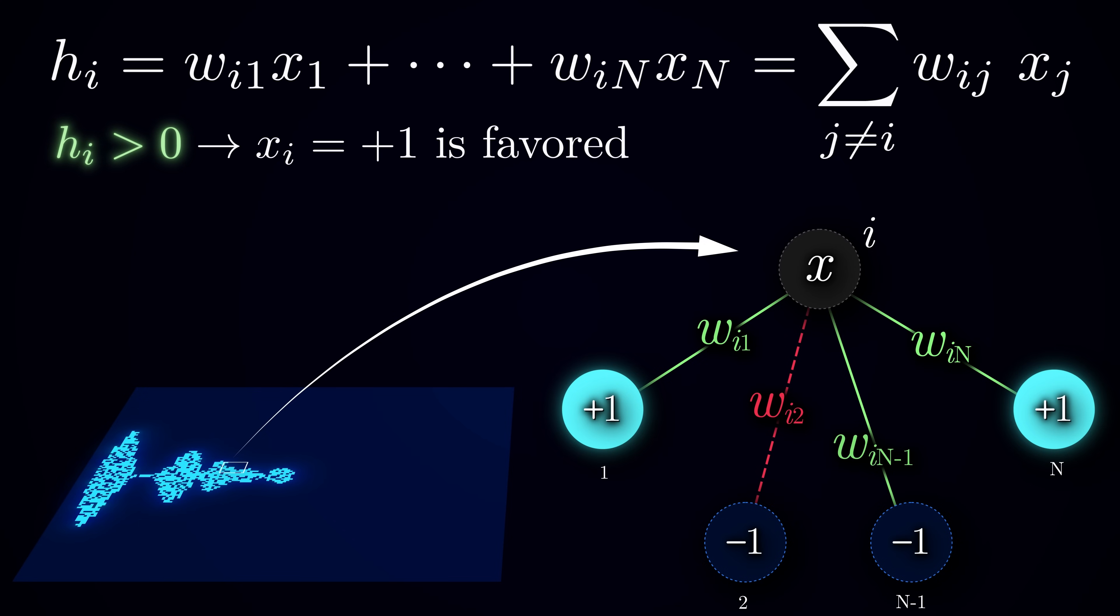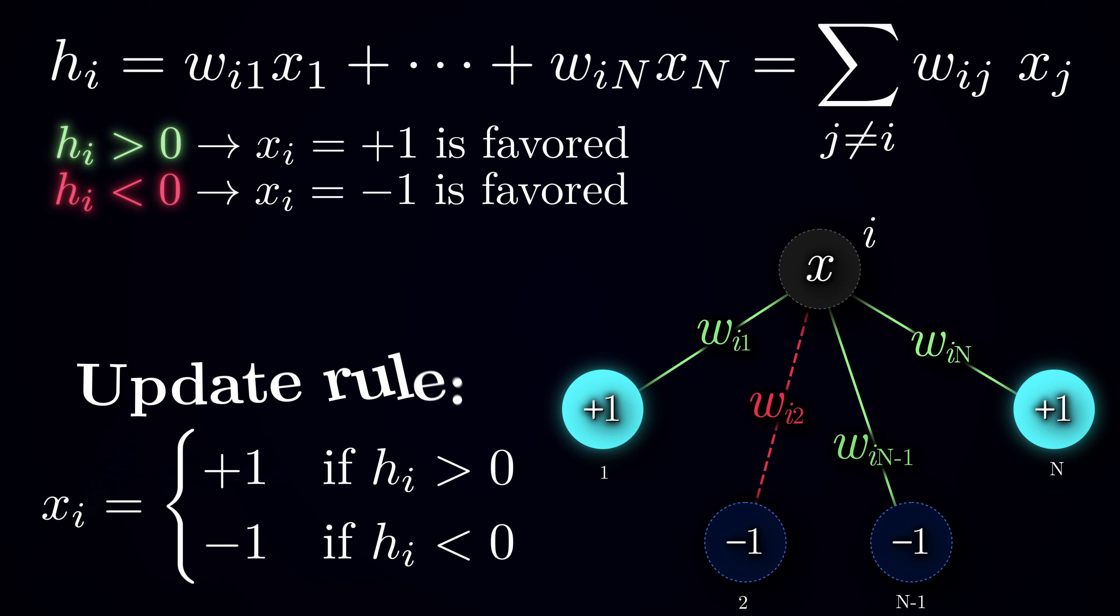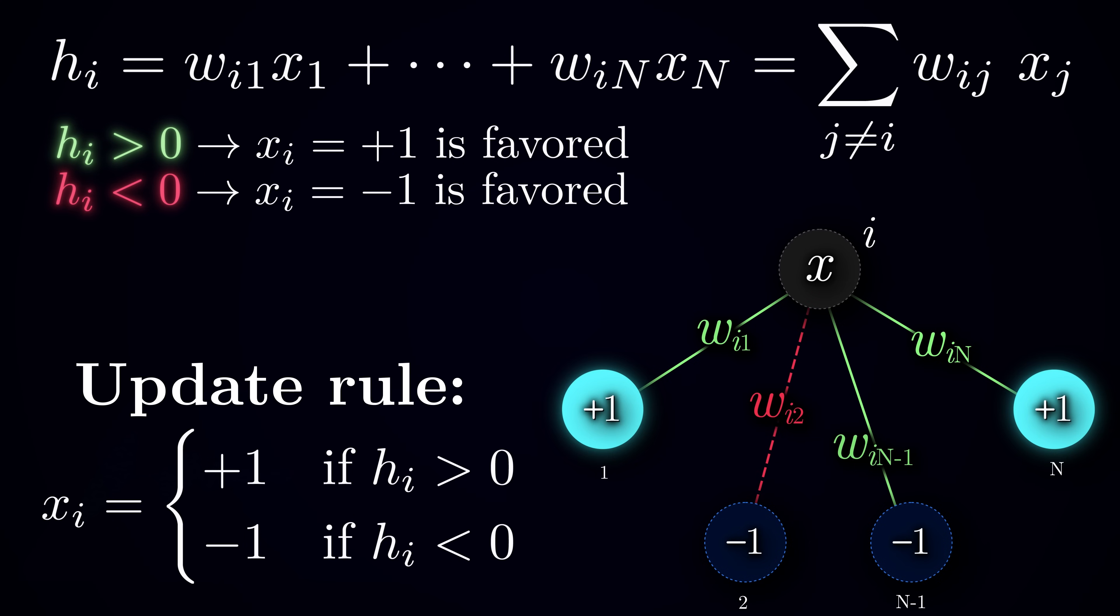If hi is positive, it means that the weighted sum of the other neuron states is in favor of neuron i being in the plus one state. Conversely, if hi is negative, it suggests that neuron i should be in the minus one state to minimize the conflict with the other neurons. So we will update the state of the neuron i based on the sign of hi. Notice that this update is guaranteed to decrease the energy of the network because from the two candidate states we are selecting the more energetically favorable one.